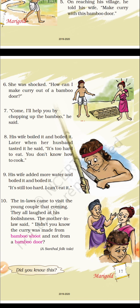Eighth point: his wife boiled it and boiled it. Later, when her husband tasted it, he said it is too hard to eat — you don't know how to cook. The wife chopped and boiled the bamboo door pieces for a long time, but the husband said it was too hard to eat.